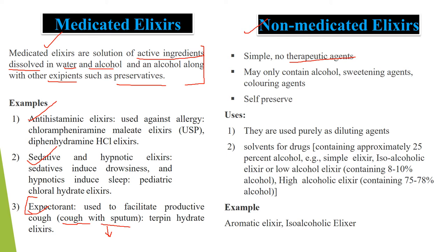Non-medicated elixirs do not contain therapeutic agents. They simply contain alcohol, sweetening agents, and coloring agents, and they work as self-preservatives. Their main uses are as diluting agents and as solvents to solubilize drugs. Examples include aromatic elixir and iso-alcoholic elixir.